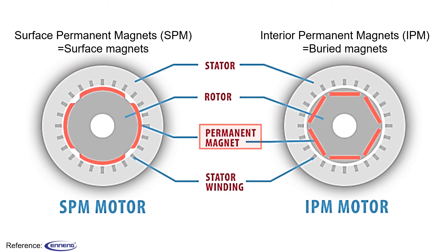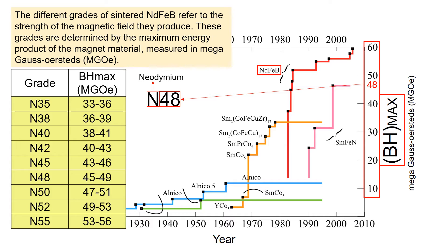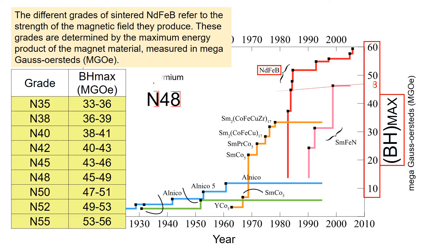Today we are going to look into the magnet properties. The different grades of sintered neodymium iron boron refer to the strengths of the magnetic field they produce. These grades are determined by the maximum energy product of the magnet material, measured in mega gauss oersted. The N stands for neodymium, one element that makes up the magnet material, and the number indicates the maximum energy product.